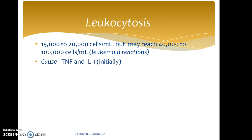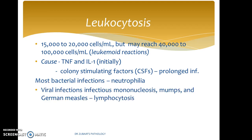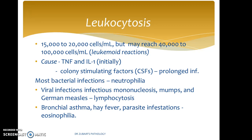The cause involves tumor necrosis factor, interleukin-1, and colony-stimulating factors. Bacterial infections cause neutrophilia, whereas viral infections lead to lymphocytosis — for example, infectious mononucleosis, mumps, and German measles all cause lymphocytosis. Bronchial asthma, hay fever, and parasite infestation cause eosinophilia. This is a very common exam question. Causes of eosinophilia include bronchial asthma, hay fever, parasite infestation, Löffler's syndrome, and certain malignancies.